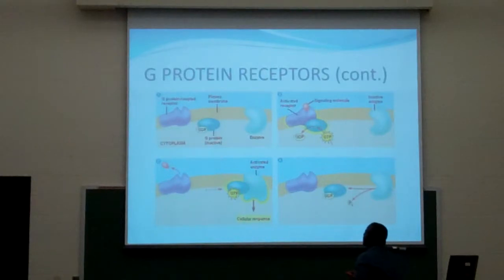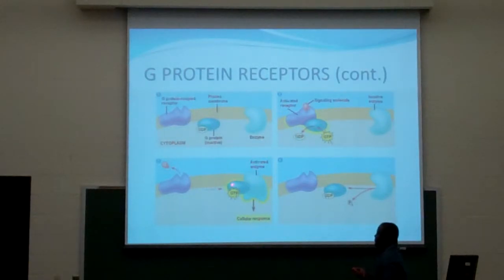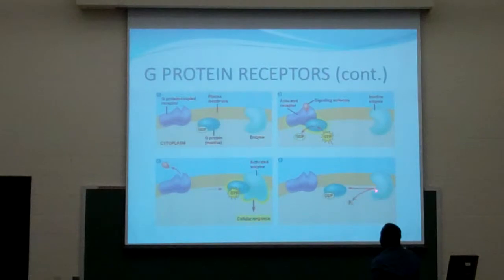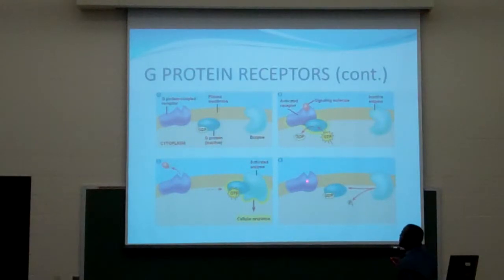When it gets to the enzyme, it fuses with the enzyme, and it forces the enzyme to change. When this happens, the enzyme is activated and it releases signals for a secondary response. After the response is received, the enzyme here becomes a diphosphate — just a diphosphate — and it releases a phosphate, releasing the GTP. The GTP can then be reused, and it becomes inactive until another signal is received.